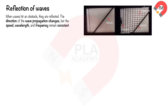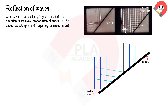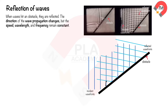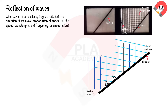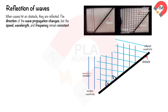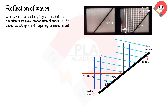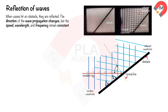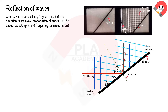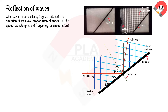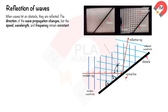Candidates should be able to draw the diagram of wave reflection. Draw the incident and reflected wavefronts. The angle between the incident wavefronts and the surface of the obstacle equals the angle between the reflected wavefronts and the surface. Draw the incident ray perpendicular to the incident wavefronts. Draw the normal line at right angles to the obstacle surface. The angle of incidence, i, is between the incident ray and the normal line. Draw the reflected ray perpendicular to the reflected wavefronts. The angle of reflection, r, is between the reflected ray and the normal line.